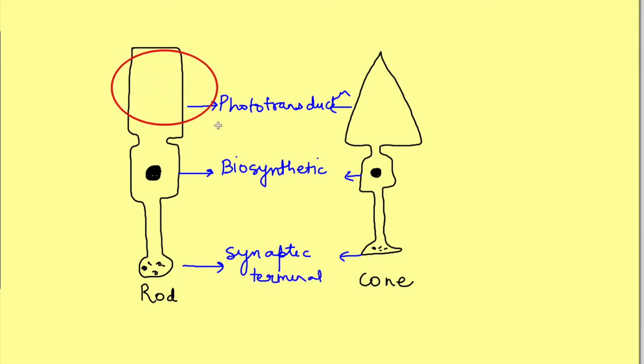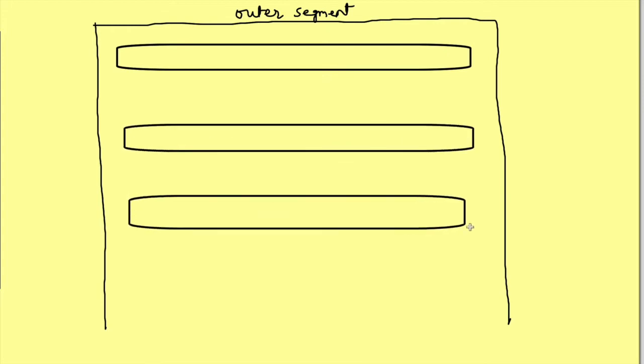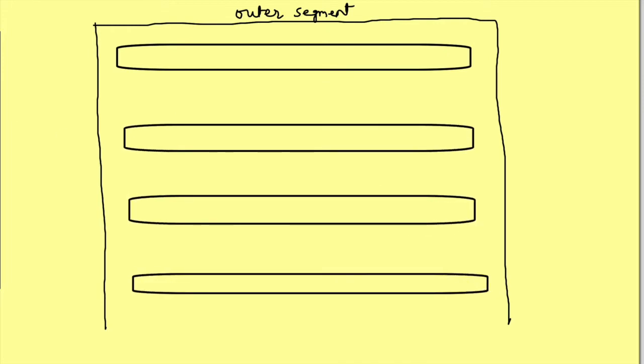Let's zoom this outer segment. This outer segment which is responsible for phototransduction consists of stacked membranous discs which have photopigments on their membrane. The stacking of membranous discs basically increases the surface area tremendously and that's why they can have a large number of photopigments on them.